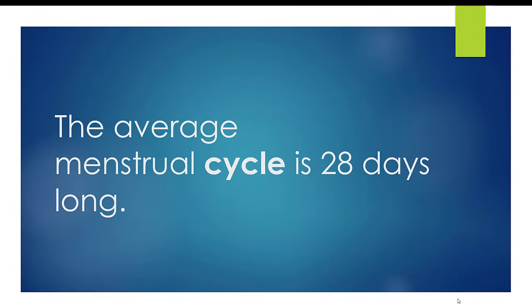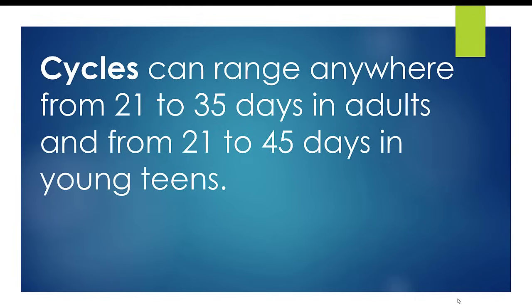First of all, you should know the average menstrual cycle is of 28 days. The cycle can range anywhere from 21 to 35 days in adults, but it can range up to 45 days in young teens.